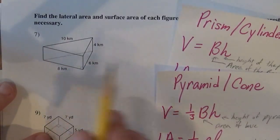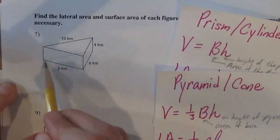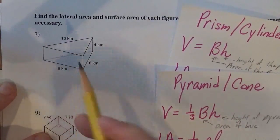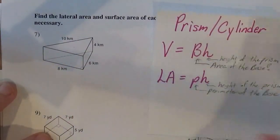Okay, so first things first, is it a prism or is it a pyramid? Well, two bases connected, no pointy top. This is a prism.